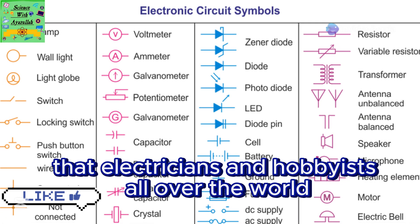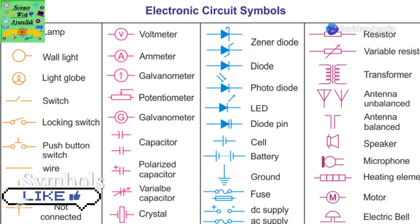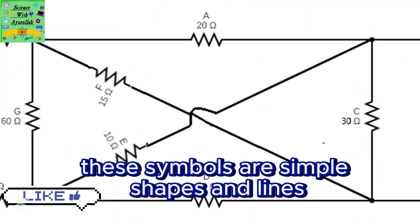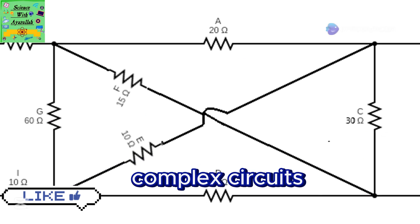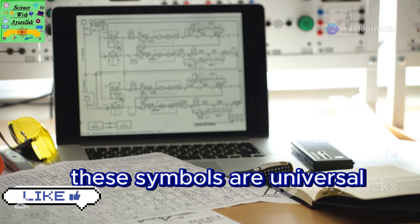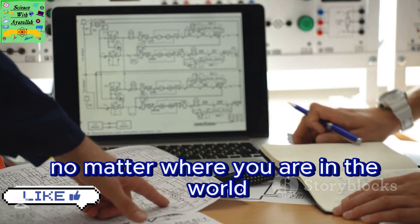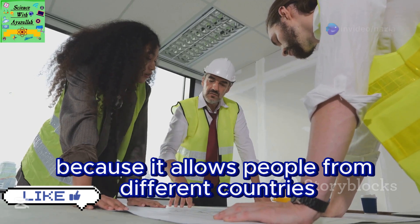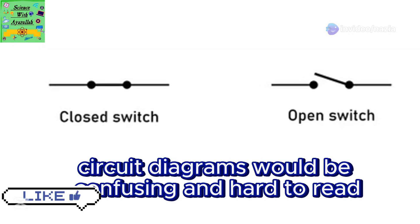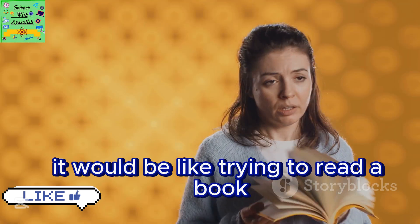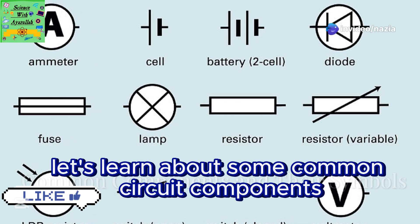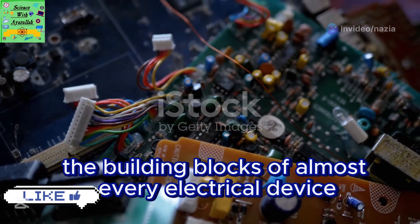Circuit diagrams use special symbols to represent different components like batteries and bulbs. These symbols are like a universal language that electricians and hobbyists all over the world understand. They are simple shapes and lines that make it easy to draw and understand complex circuits — like learning a new alphabet. Once you know the symbols, you can read any circuit diagram, no matter where you are in the world. Without symbols, circuit diagrams would be confusing and hard to read.